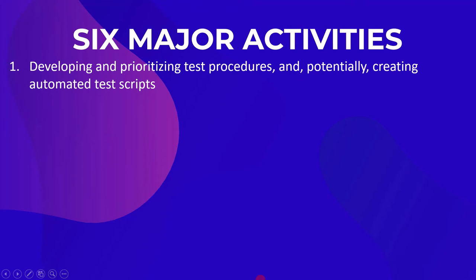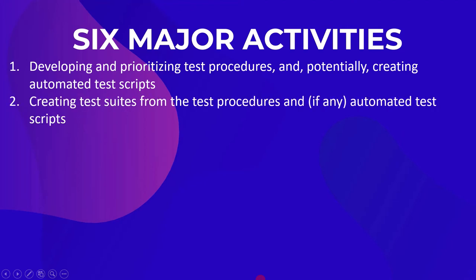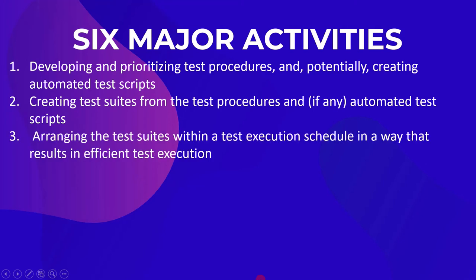The first activity is developing and prioritizing test procedures and potentially creating automated test scripts. The second activity is creating test suites from the test procedures and, if any, automated test scripts. The third activity is arranging the test suites within a test execution schedule in a way that results in efficient test execution.